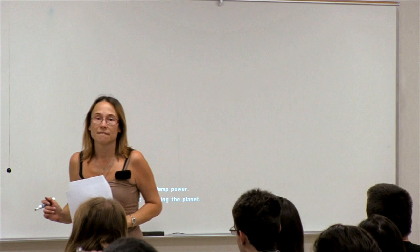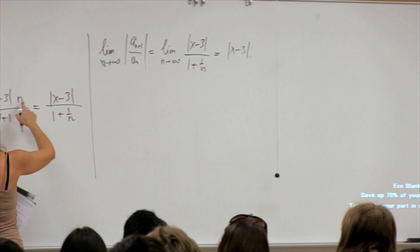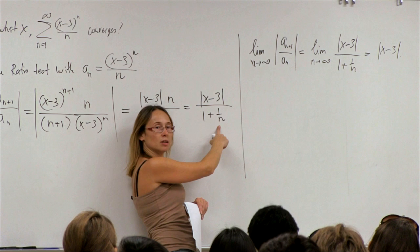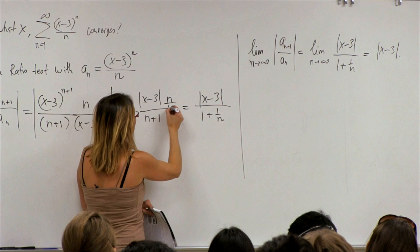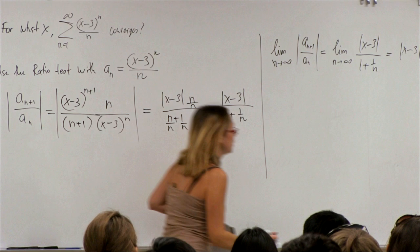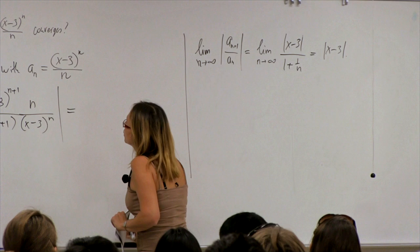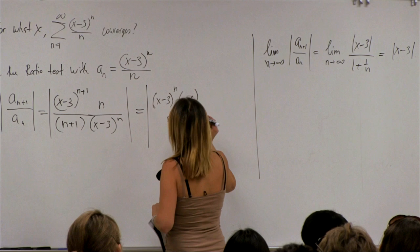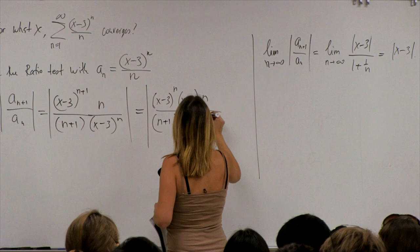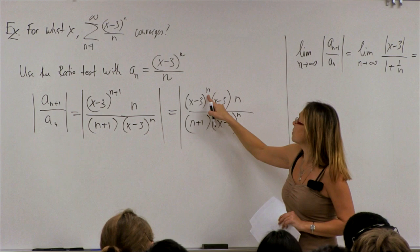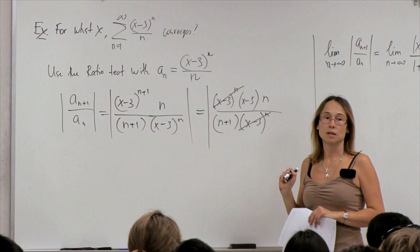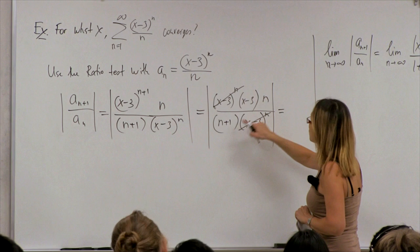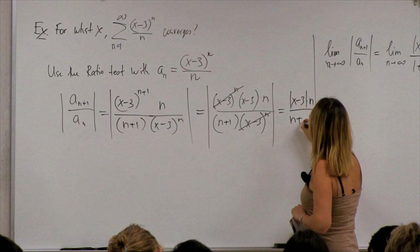A student asks why we multiplied by n: we divided numerator and denominator by n to bring it into a form easier to evaluate the limit. We decompose (x−3)^(n+1) into (x−3)^n times (x−3), the (x−3)^n terms cancel completely, and we're left with |x−3| · n/(n+1).